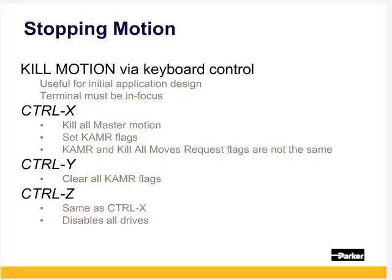To stop motion in the terminal window immediately, hold CTRL and type X. This will kill all motion and sets the kill all motion request flag for all axes. To clear the kill all motion flags hold CTRL and type Y. CTRL Z kills all motion and disables all drives.